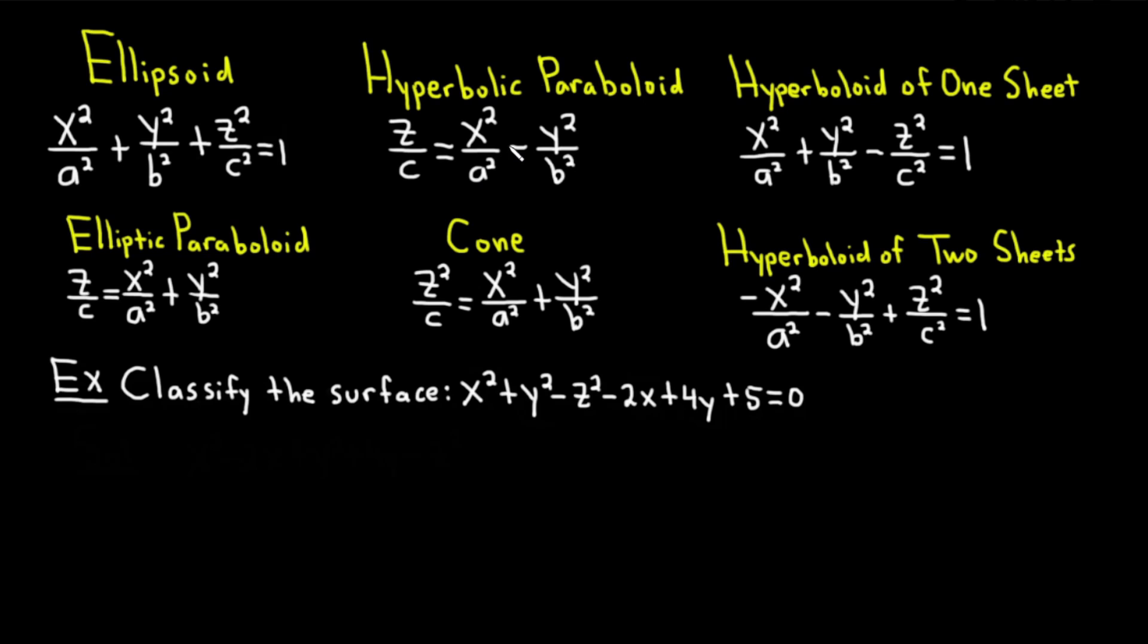Then we have the hyperbolic paraboloid, which is z over c equals x squared over a squared minus y squared over b squared. Notice the similarities. The hyperbolic paraboloid has a minus. Think of hyperbola, it has a minus sign in two dimensions. Elliptic paraboloid has a plus. Think of an ellipse, it has a plus sign in two dimensions. So easier to remember because of those relationships.